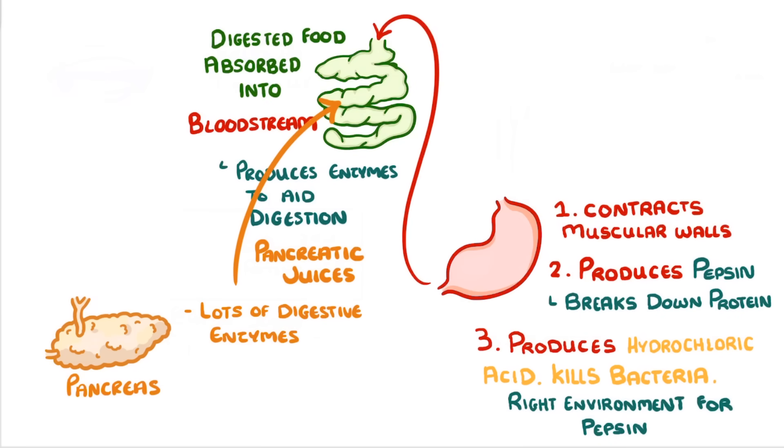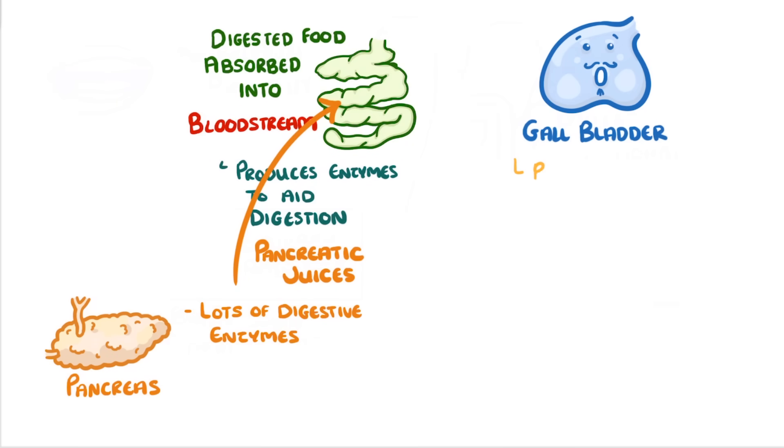Another organ that secretes things into the small intestine is the gallbladder. But this time, it's releasing bile rather than digestive enzymes. This bile has two main roles.